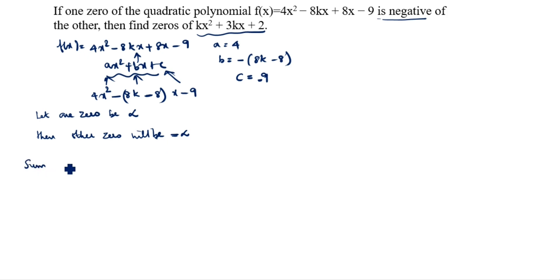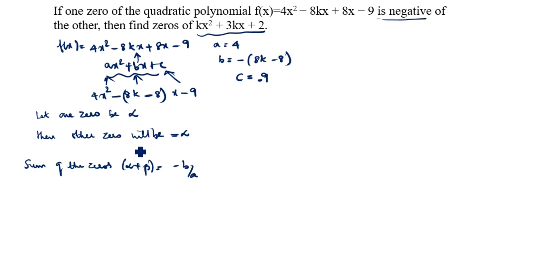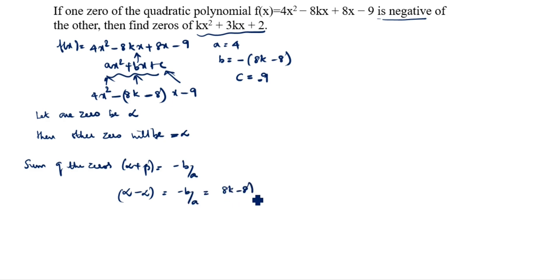Now, sum of the zeros. What is the sum of zeros formula? Alpha plus beta equals minus b by a. Here alpha is alpha and beta is minus alpha. So alpha + (-alpha) = -(8k - 8) divided by 4, which gives minus of 8k minus 8, so plus, divided by a which is 4.